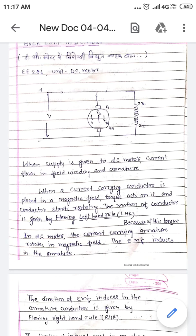When supply is given to DC motor, current flows in field winding and armature. Field winding produces magnetic field.